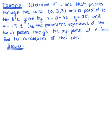Determine if the line passing through the point (0, -3, 8) is parallel to the line given by the parametric equations x = 10 + 3t, y = 12t, and z = -3 - t. We also want to determine: does this line pass through the xy-plane? If it does, find the coordinates of that point.